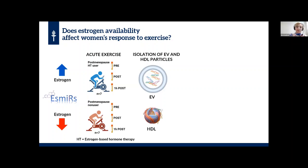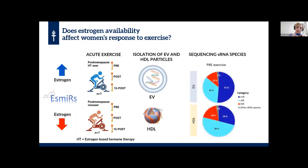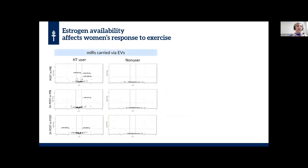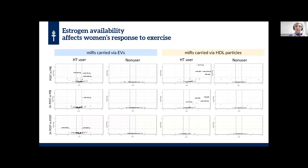From the isolated particles, we examined small non-coding RNA species known to coordinate several biological processes. First, examining the two study groups together before acute exercise, our results revealed that EV and HDL particles have a distinct small RNA content. In EVs, the most abundant species were microRNAs; in HDL, small RNAs that originated from ribosomal RNA. However, when we looked at the top 100 sequences, microRNAs were the most abundant in both carrier particles, so we continued the analysis with microRNAs. When examining hormone therapy users and non-users separately, only hormone therapy users exhibited a response to exercise in the microRNAs carried via EVs. There were no changes in the non-users. The same phenomenon was found in HDL particles.